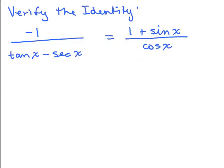Alright, let's try to verify this identity. So I like to work on the side that looks a little more complicated and to me, that looks like the left-hand side because it's in terms of tangents and secants instead of sines and cosines. So I'm going to start on the left and put everything in terms of sines and cosines and see where it goes.